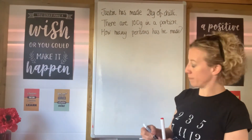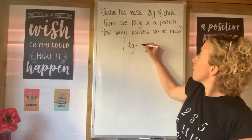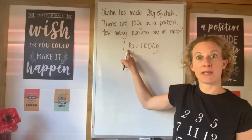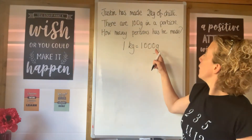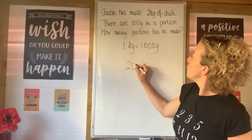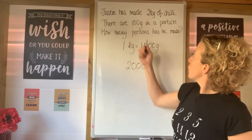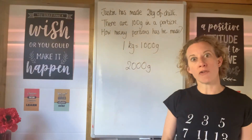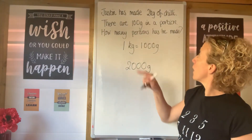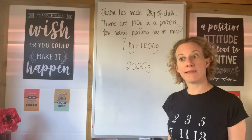Hopefully we know that one kilogram is a thousand grams — 'kilo' is a prefix meaning a thousand. So if we've got two kilograms, we've got two thousand grams. And because we're seeing how many portions of 100 grams we've got, we are going to divide. We're going to divide 2000 grams by 100.